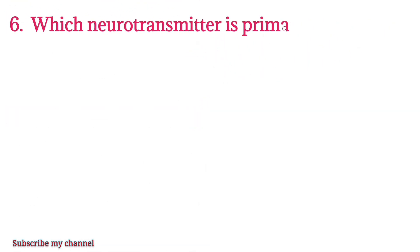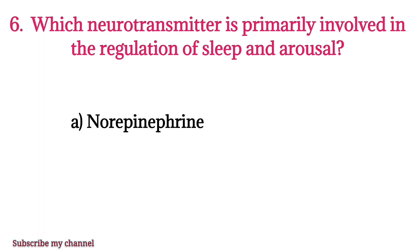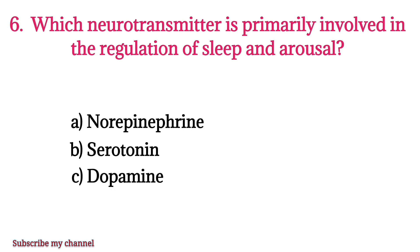MCQ number six: Which neurotransmitter is primarily involved in the regulation of sleep and arousal? Option A: norepinephrine, option B: serotonin, option C: dopamine, option D: GABA. The right option is option B.